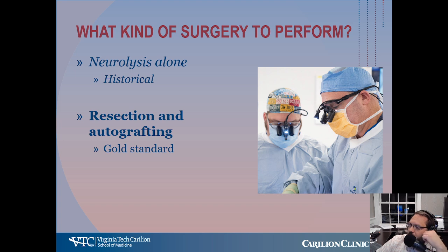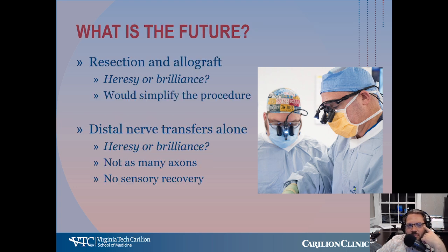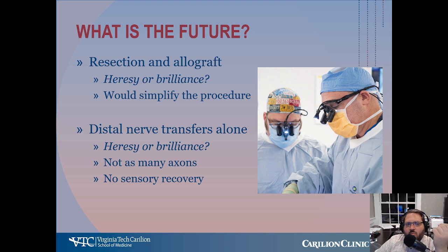The kind of surgery to perform: the choices are neurolysis alone — which is really just historical; Howard Clark and others really showed that this is inferior to resection and autografting, which remains the gold standard. Essentially the operation is exploration, intraoperative testing, cut out what doesn't work, graft it with sural nerve. Resection and allograft has been advocated by some but remains non-standard treatment at this point. Only time will tell whether allograft for obstetrical brachial plexus palsy is heresy or brilliance — it would certainly simplify the procedure and reduce the time it takes to harvest sural nerve on a baby.